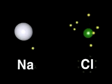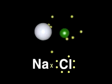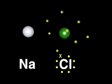If the atoms collide with sufficient energy, the chlorine atom will remove the electron from the sodium.